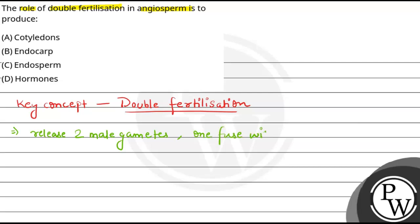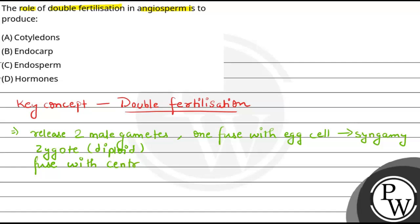One of these two male gametes fuses with the egg cell, resulting in a process known as syngamy, forming a diploid zygote. The other male gamete fuses with the central cell, where two polar nuclei are present — this process is called triple fusion.